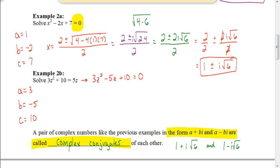Plug these numbers into your quadratic formula and simplify. A hint: when you get the piece under the root, the only thing you'll be able to do is factor out an i — nothing else can be simplified underneath the root in this problem. Go ahead and solve this on your own, then pause the video and hit play when you're ready to check your answer.